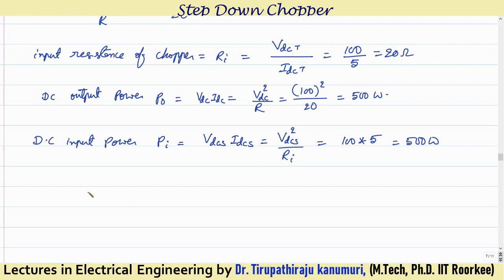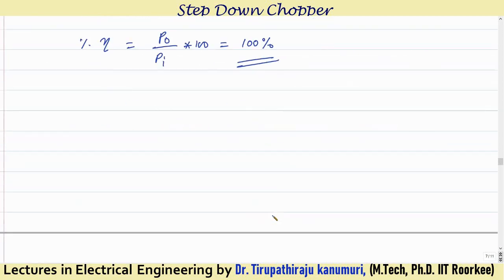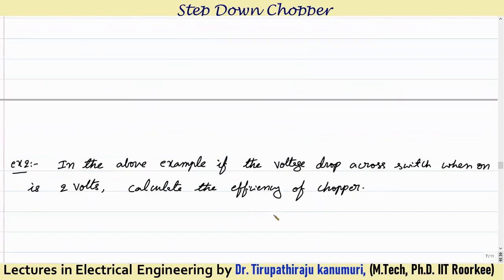Percentage efficiency = (P_output / P_input) × 100 = (500 / 500) × 100 = 100%. In this way you solve the numerical for a purely resistive, ideal-switch case.